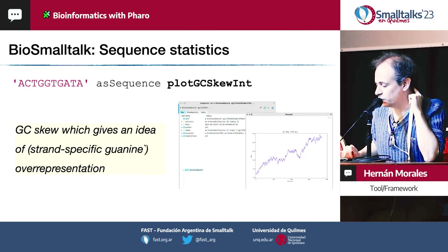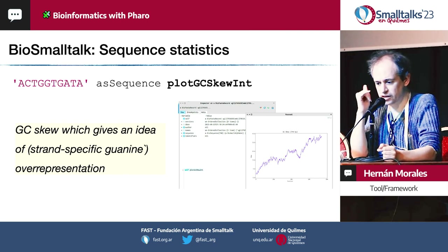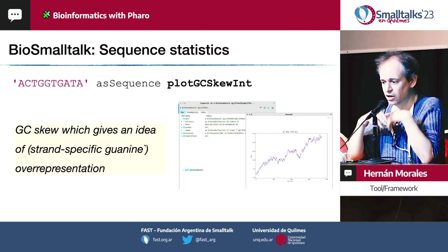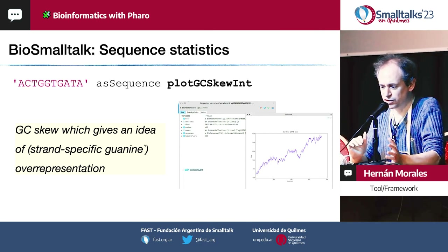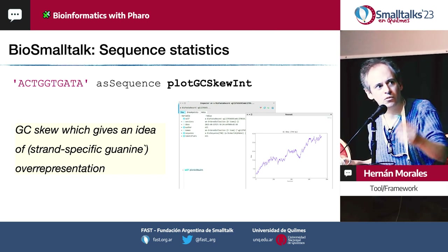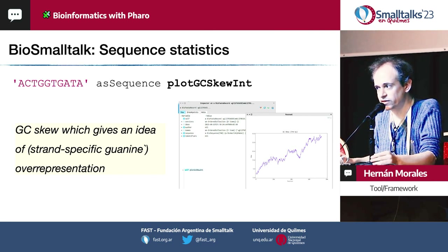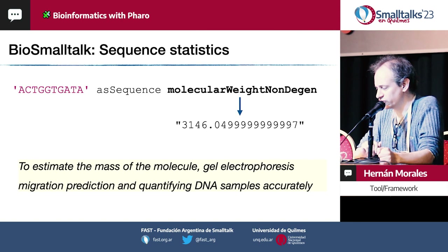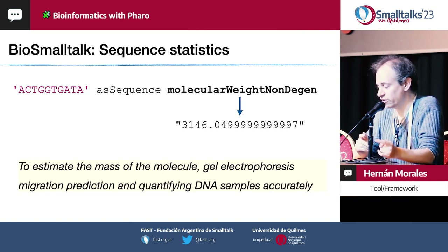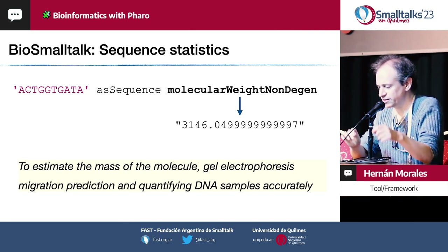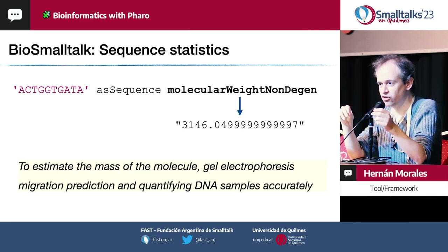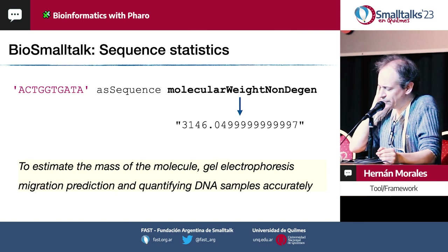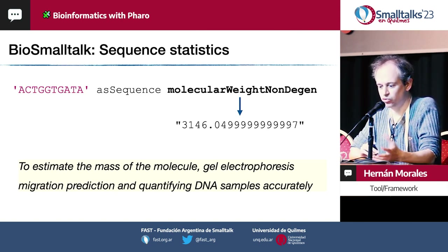GC content is a good quality control metric because under equilibrium conditions, with no selective or mutational pressure, the frequency of nucleotides is equally distributed in the genome. We can easily see if there is contamination from a sequencer. There are also metrics for estimating the mass of the molecule, used in PCR primer design. PCR primers are short single-stranded DNA sequences designed to be complementary to the beginning of a target sequence, used to amplify sequences needed for correctly reading DNA.